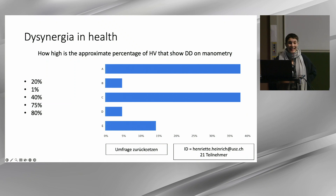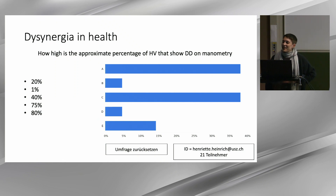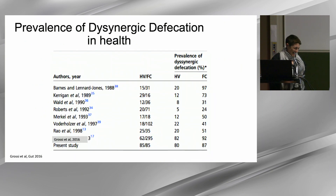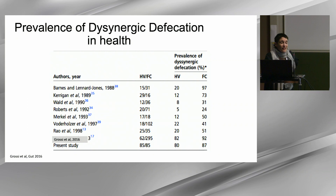The correct answer is E — approximately 80%. That reflects the publications, though that is a publication bias — it's the way you counted it. This is a summary study where a large number of healthy volunteers showed dyssynergia. But of course, this has been debunked by recent studies where you can actually use the recto-anal pressure gradient for diagnosing dyssynergia rather well. But this is about patterns. Moving on to the rectum.